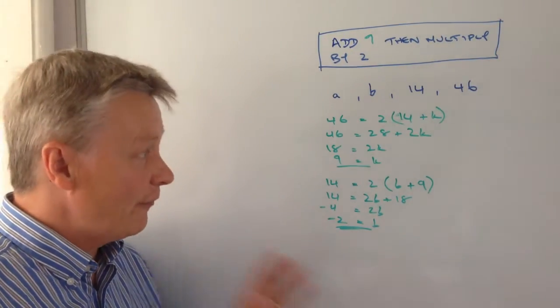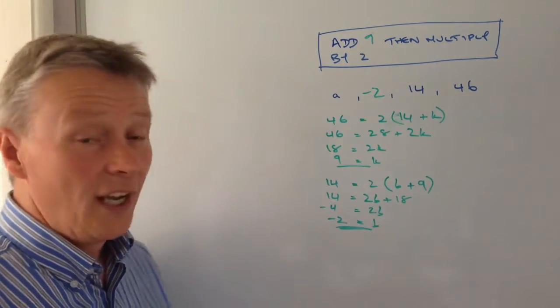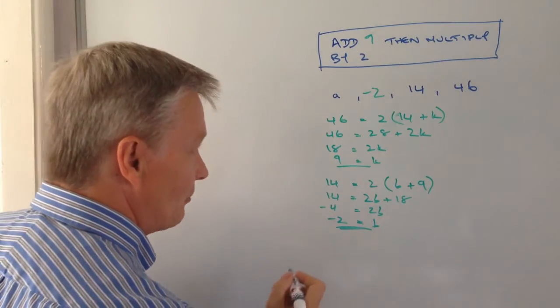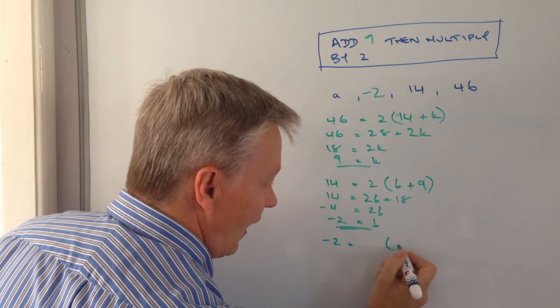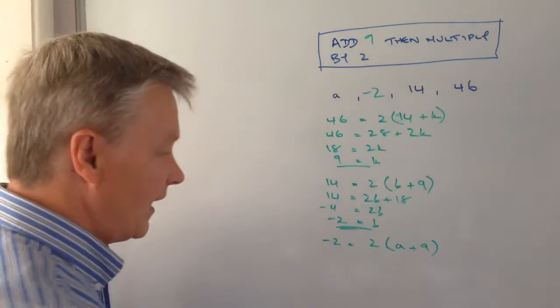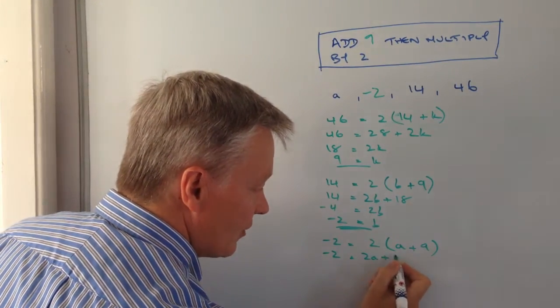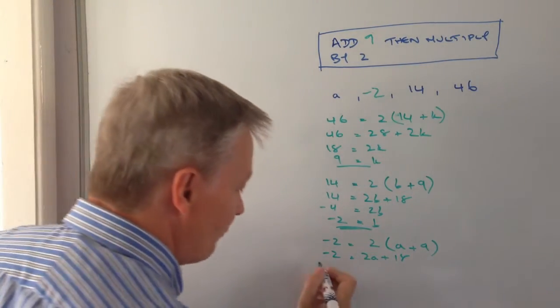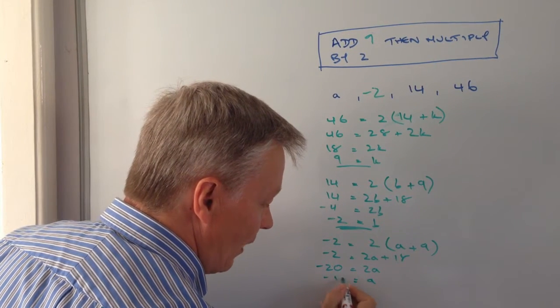So now that's the first part of my question answered. I can say that b equals minus 2. Then I'll do exactly the same exercise in order to work out a. So I'm going to say that minus 2 has been generated by adding 9 to a and multiplying by 2. I'm going to work that out as minus 2 equals 2a plus 18. If I'm minus 18 from both sides, that's going to give me minus 20 equals 2a and therefore a equals minus 10.